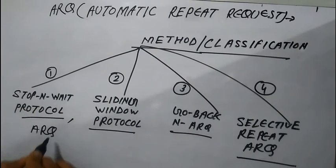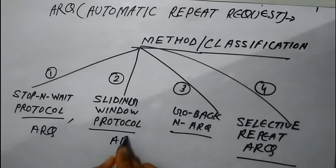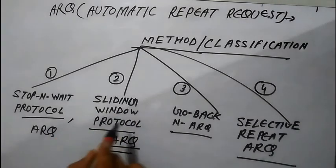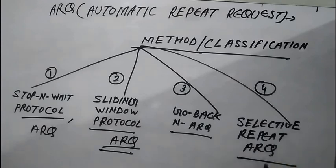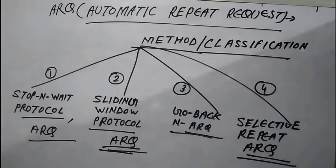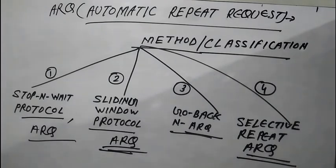Here we are focusing on Stop and Wait protocol, Sliding Window protocol, Go-Back-N ARQ, and Selective Repeat ARQ. All four terms come under the Automatic Repeat Request. These are the error correction methods for delivering data from sender to receiver without any error. In all four types of techniques, we ensure error-free transmission from sender to receiver.